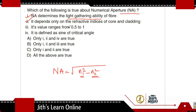The third statement is: Its value ranges from 0.5 to 1. Actually, the numerical aperture value does not go up to 0.5 or above in that range — that statement is questionable. The fourth statement is: Numerical aperture is defined as the sine of the critical angle.